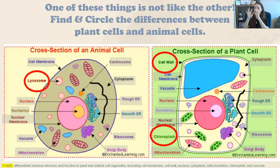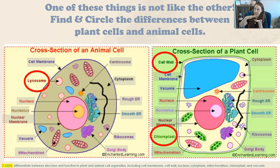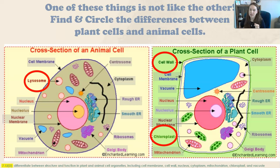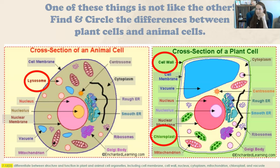Now let's look at two specific types of eukaryotic cells: the animal cell and the plant cell. In the animal cell you'll see lysosomes, which you will not see in the same way in a plant cell. In the plant cell you'll see a cell wall surrounding the cell membrane — that's the green line. Animal cells have a cell membrane but do not have the additional structure of a cell wall. Plant cells also have chloroplasts, which give them their green color.